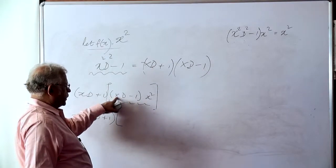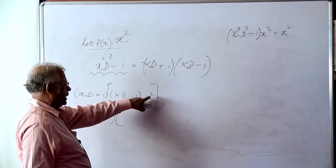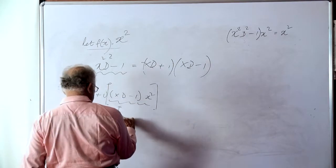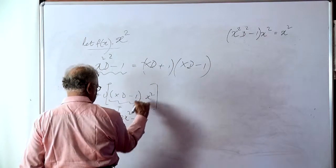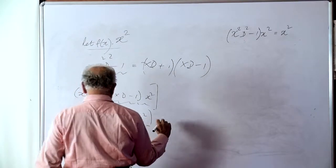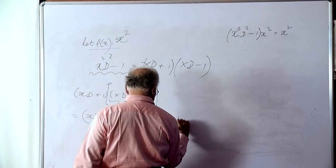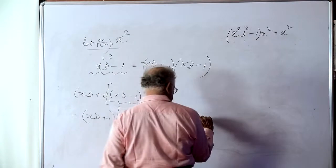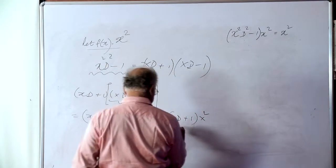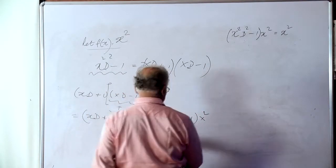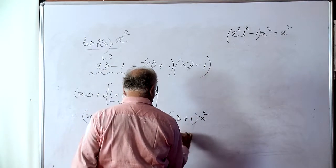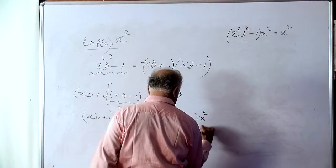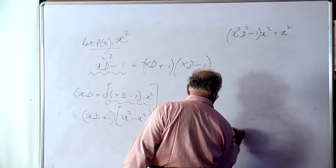Now, what is xd of x squared? d of x squared is 2x. 2x into x is 2x squared minus 1 into x squared is x squared. So we have xd plus 1 to be operating on x squared. This is nothing but x d(x squared). So x into 2x plus 1 into x squared, that is x squared. The result is 3x squared.